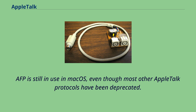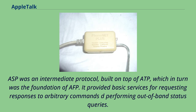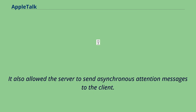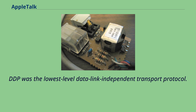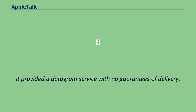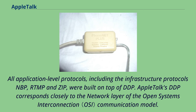ASP provided basic services for requesting responses to arbitrary commands and performing out-of-band status queries. It also allowed the server to send asynchronous attention messages to the client. DDP was the lowest-level data link-independent transport protocol, providing a datagram service with no guarantees of delivery. All application-level protocols, including the infrastructure protocols NBP, RTMP, and ZIP, were built on top of DDP. AppleTalk's DDP corresponds closely to the network layer of the OSI communication model.